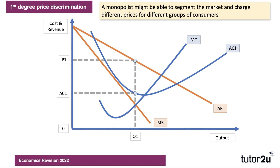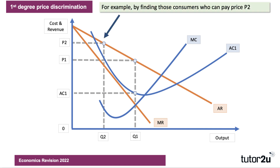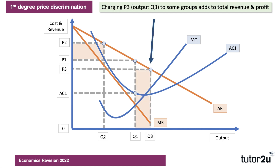A monopolist might be able to segment the market and charge different prices to different groups of consumers. First degree is essentially the extreme end of this — where they're trying to tease out of everybody their willingness to pay. For example, instead of charging everybody P1, you might sell quantity Q2 to consumers who are willing to pay P2. If you can do that, you generate some extra revenue, turning consumer surplus into extra revenue and profit.